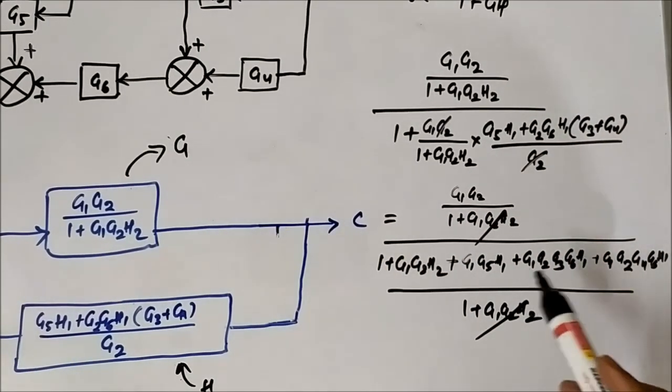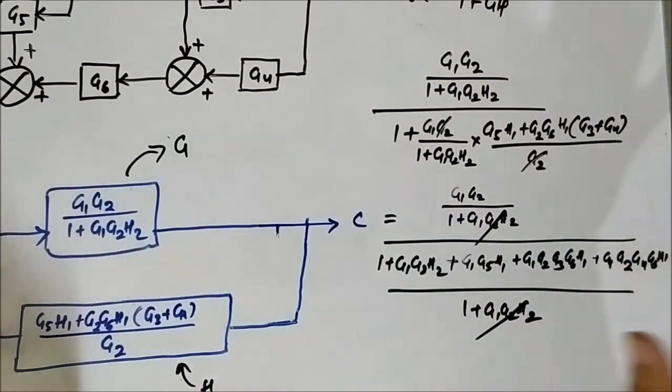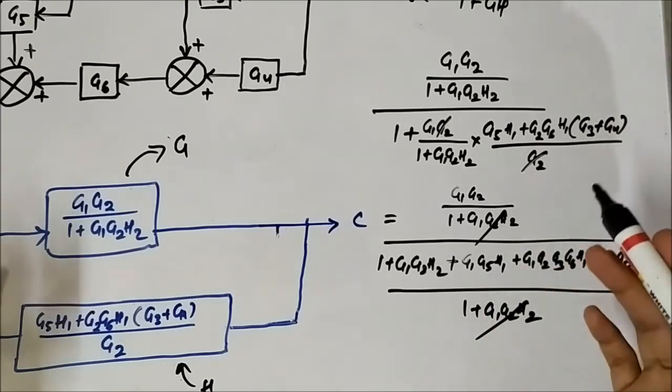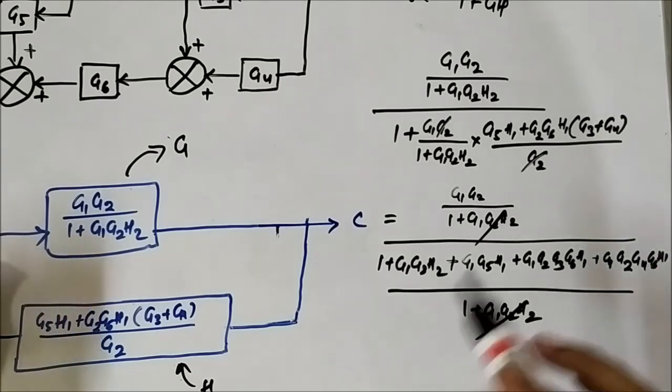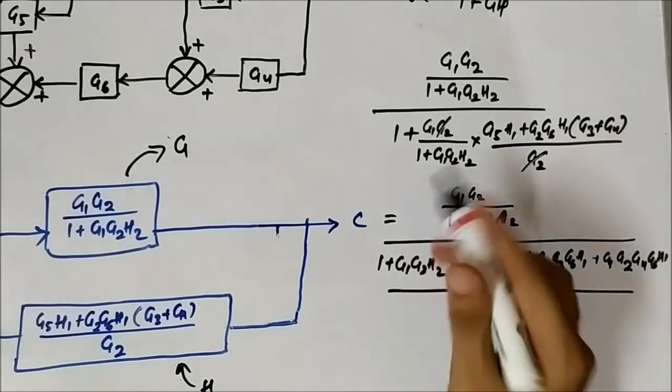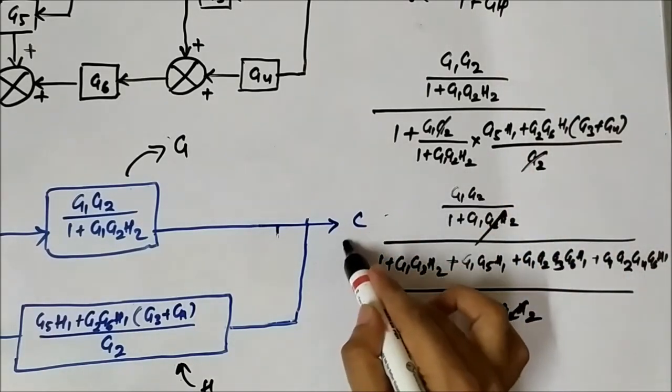As I said, these simplifications and cancelling out can be a little bit complex because a lot of terms are involved, a lot of blocks are there. So just be a little bit careful while simplifying all these things. Basic mathematics is involved, but mistakes can happen in this stage. So this is the simplified expression, C by R.